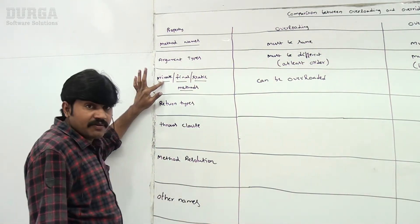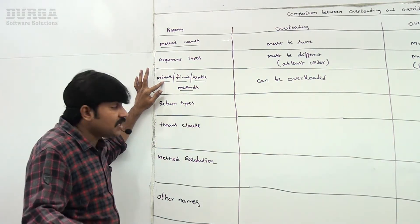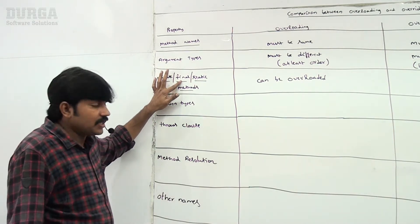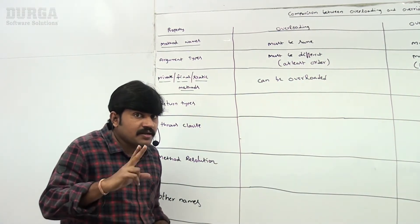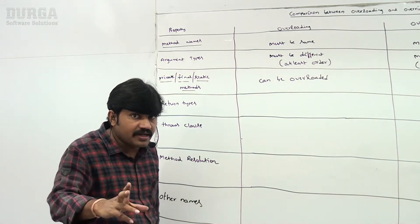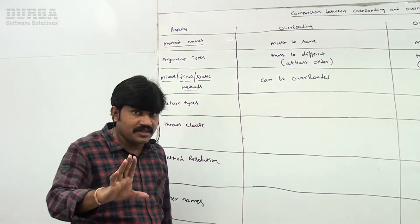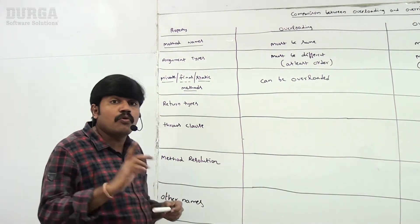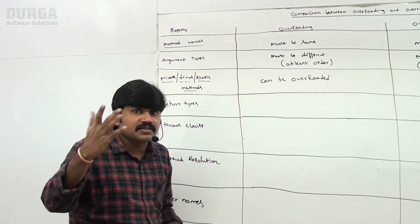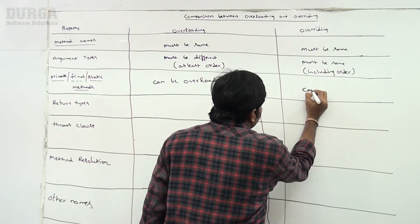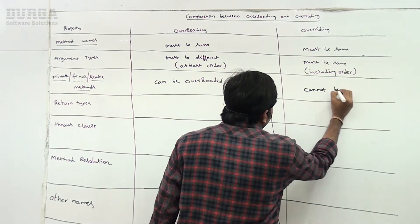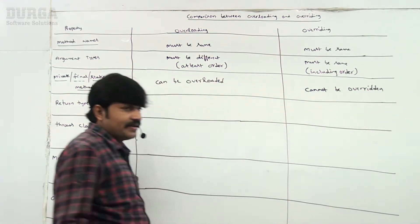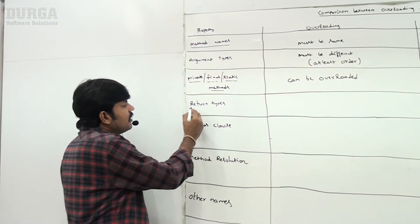But in overriding, private methods are not visible to child classes so overriding is not applicable. Final methods cannot be overridden. If both parent and child class methods are static, that is called method hiding, not overriding. So private, final, and static methods cannot be overridden.